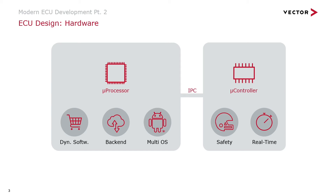On the microprocessor side, we have different properties. These are much more PC-like, which means you can install multiple operating systems such as Linux, QNX, Integrity, VxWorks, or Android. You also have the benefit of installing software dynamically, as you know from mobile devices or your PC, and backend connectivity is also easier to establish here.